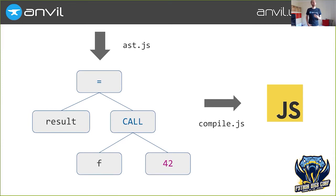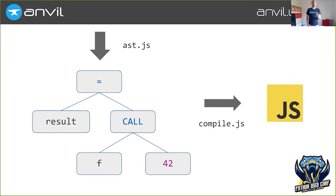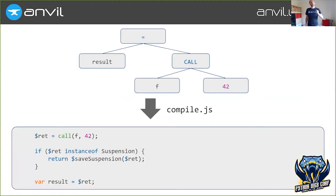We needed to modify this compiler to translate blocking Python to non-blocking JavaScript. Skulpt translates Python functions into JavaScript functions, and JavaScript functions have to return — they don't get a choice. So what we did was invent a new return type: these functions could return to say, 'I'm returning, but I'm not actually done yet — I'm just blocking.' We call that a suspension. What the call site ends up looking like is this: we call the function, take the return value and check whether it's a suspension. If it is a suspension — a special value — we save everything in our half-executed function, wrap that up in a new suspension, and return that instead.